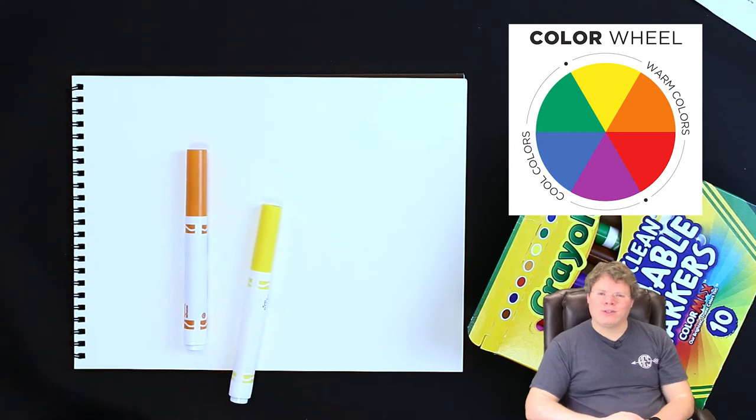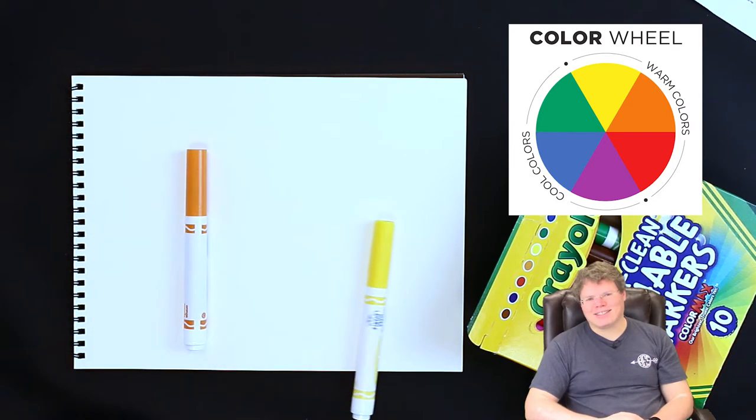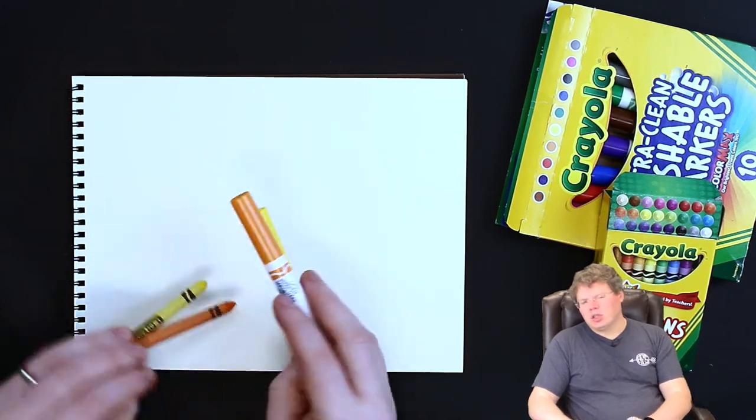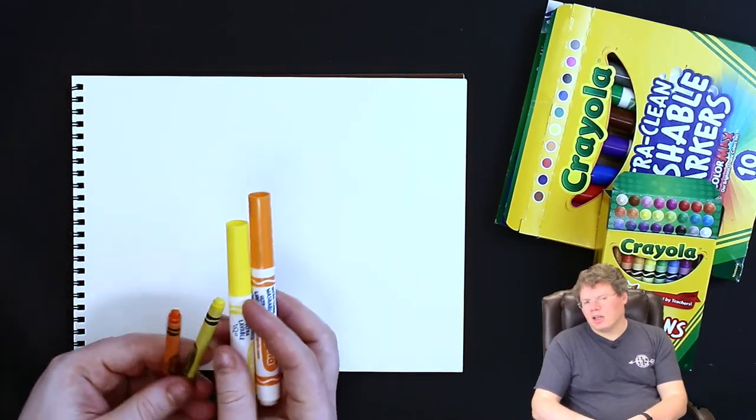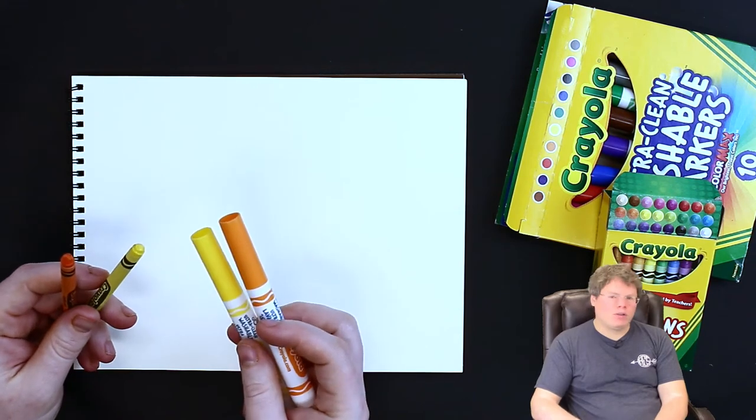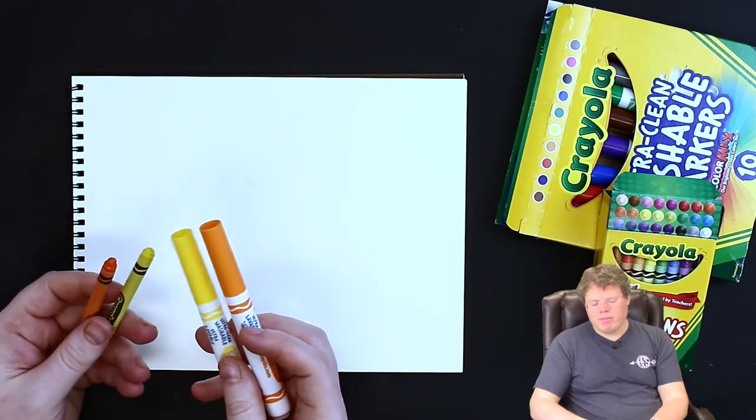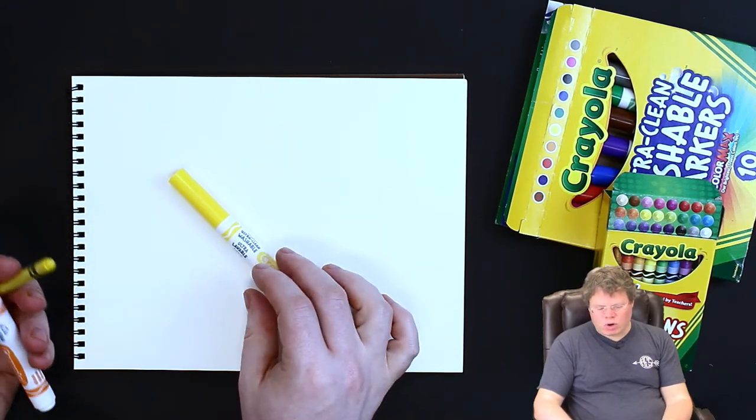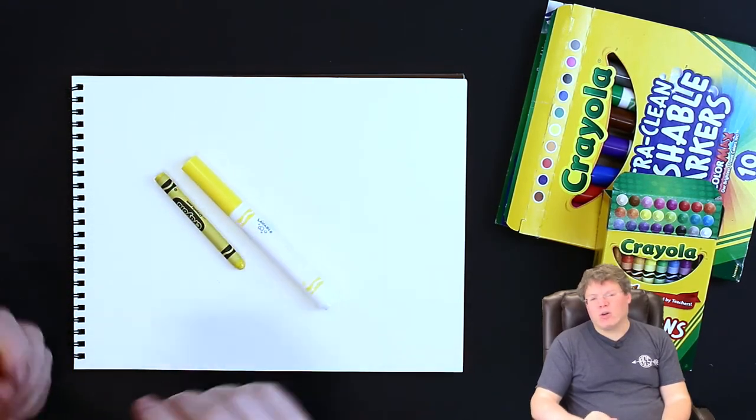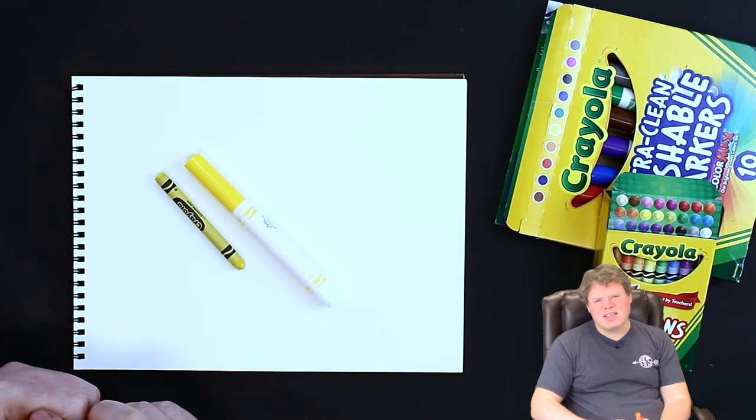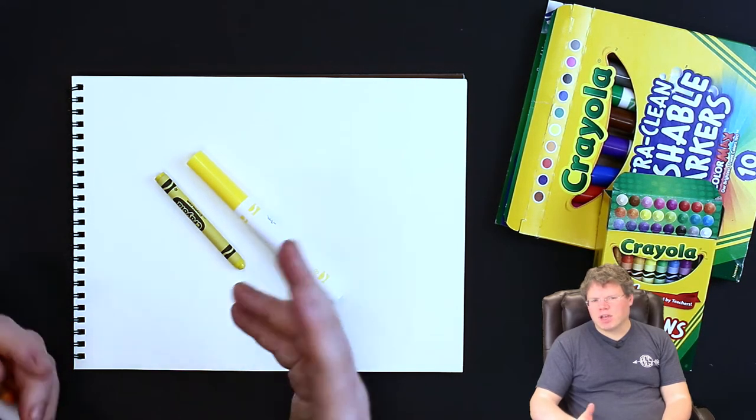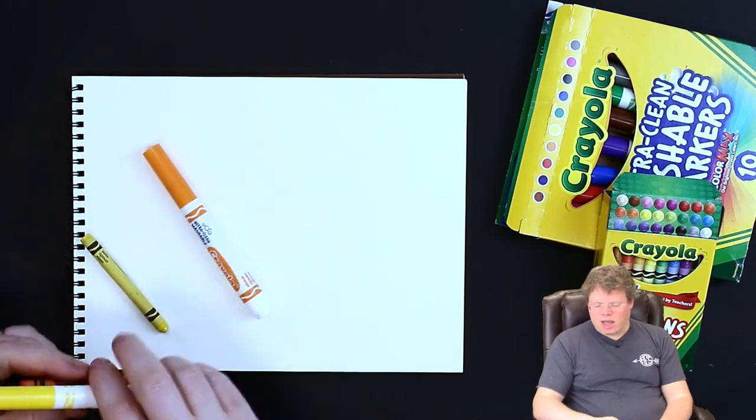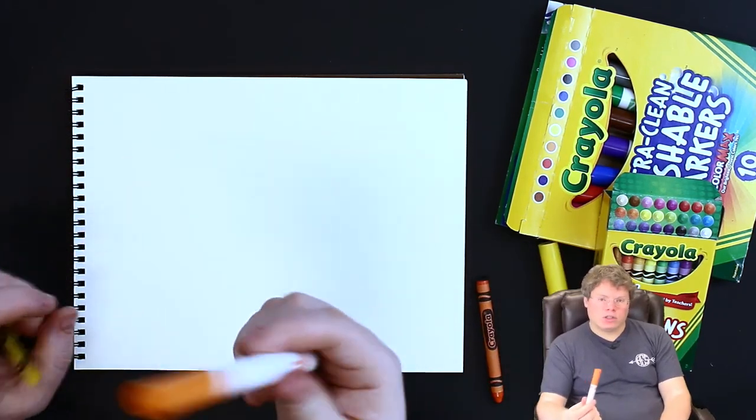So let's start with yellow and orange making a really bright happy face. Once you've gotten out a yellow and an orange, let's choose one of these colors that we're going to color our face in with and the other color that we're going to draw lines with. We're going to think about contrast, so I'm going to use an orange to draw the face and then use a yellow to color it in.